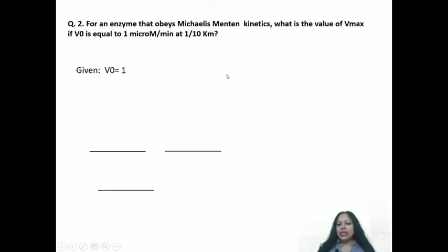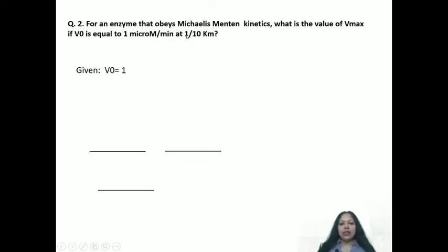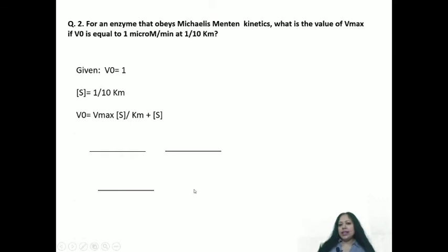We are ignoring units for now and will write them in the answers. V0 is given as 1 micromolar. The second thing given is one-tenth Km. Is that the Km? No, it is not. Km means Km. If it says one-tenth or any fraction, it means that it is the substrate concentration being given. If you are clear with what is given in the question, it is very easy to calculate the rest.